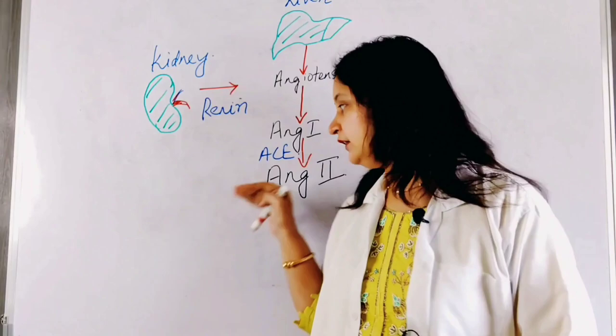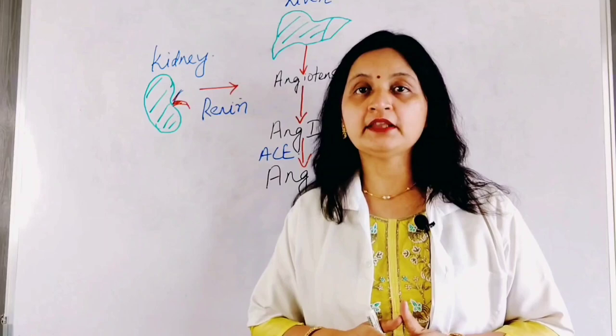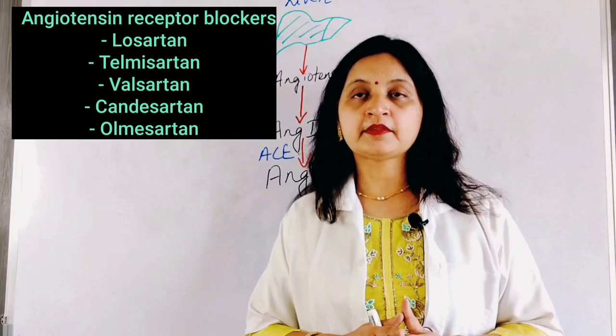Angiotensin receptor blockers antagonize angiotensin-2 action by acting at its receptors, preventing or reducing the action of angiotensin-2 and thereby helping to lower blood pressure. Some of the angiotensin receptor blockers are losartan, telmisartan, valsartan, candesartan, and olmesartan.